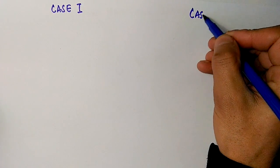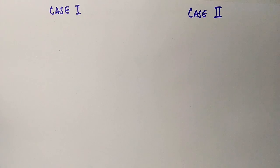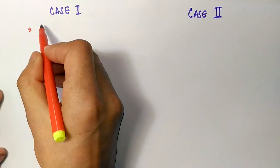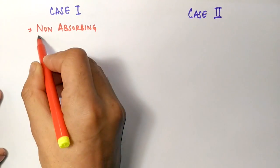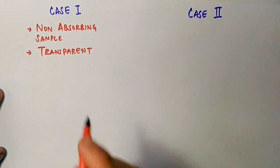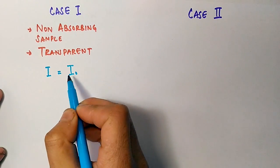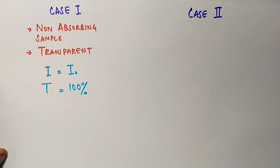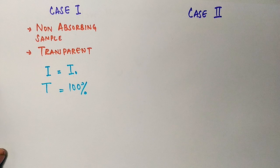Now we have two different cases here because the sample can have different properties. First case is non-absorbing sample, what we call as transparent species. In the transparent sample, I₀ will be equal to I because the incident light is not absorbed, so we get 100% transmission here.